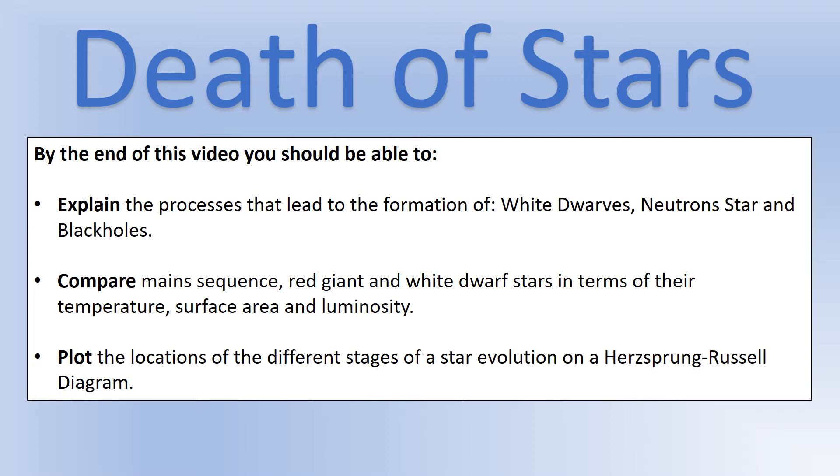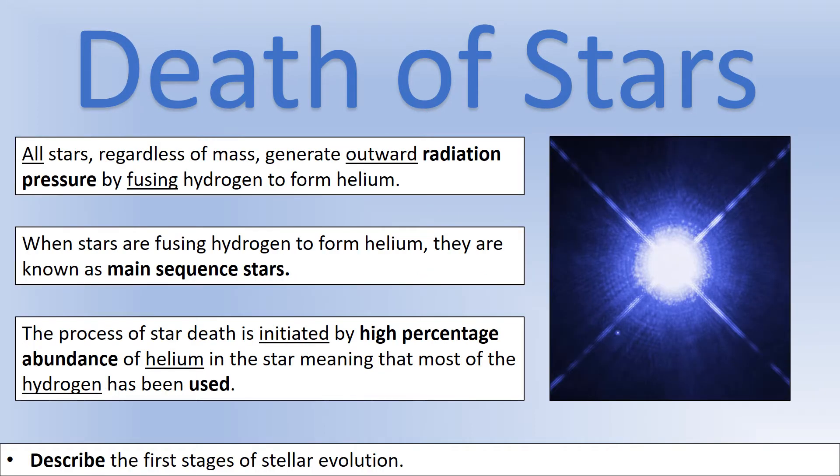So let's first look at how we start the process of the death of a star. The death of all stars starts the same way. What happens is they run out of hydrogen fuel and that means the outward radiation pressure starts to decrease. So when they're burning hydrogen or fusing hydrogen to form helium, their main sequence. But when there's a high percentage of helium and not much hydrogen left in the core, that means that they start to collapse.